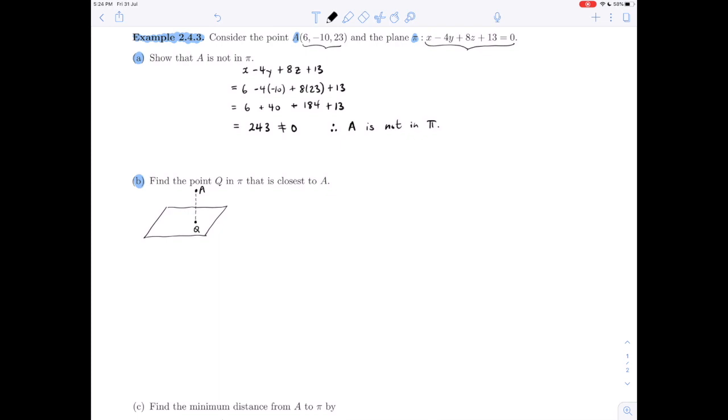We have point A which is not in the plane. We are looking to find the closest point Q which is in the plane. We start by picking any point P in the plane. Let's let y and z be 0 in the plane equation. That means x has to be -13, giving us P = (-13, 0, 0). We construct a vector from P to A: PA = (19, -10, 23).